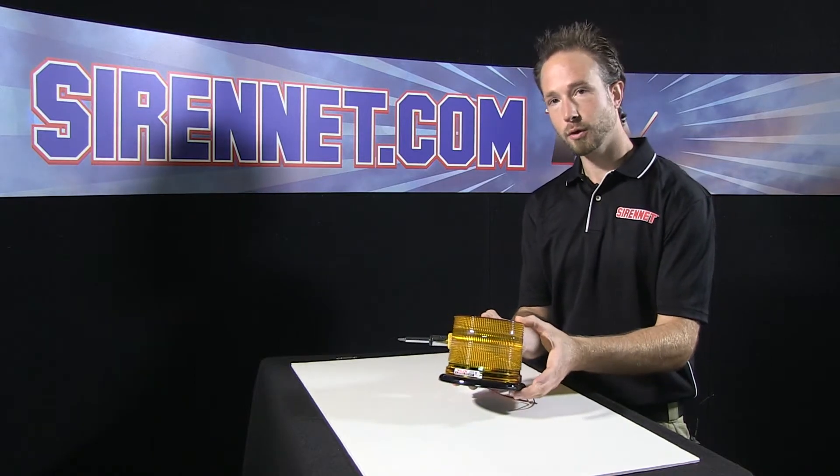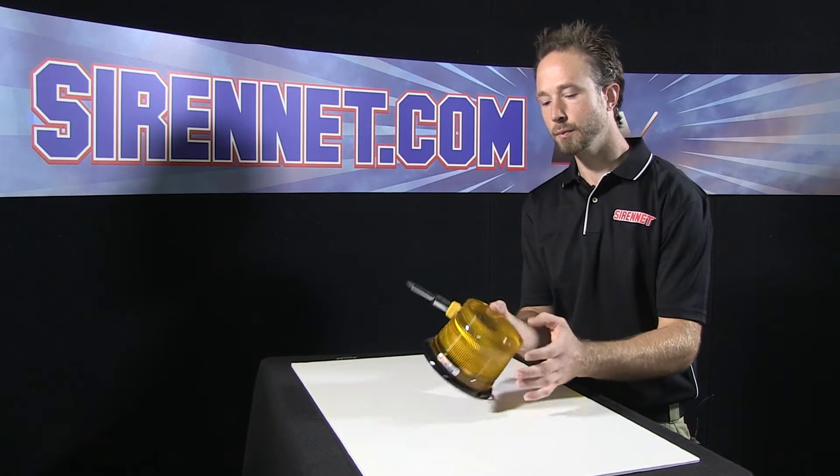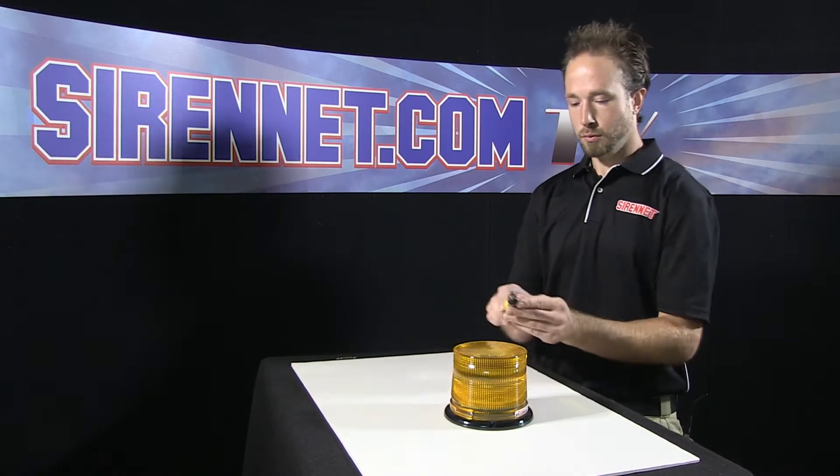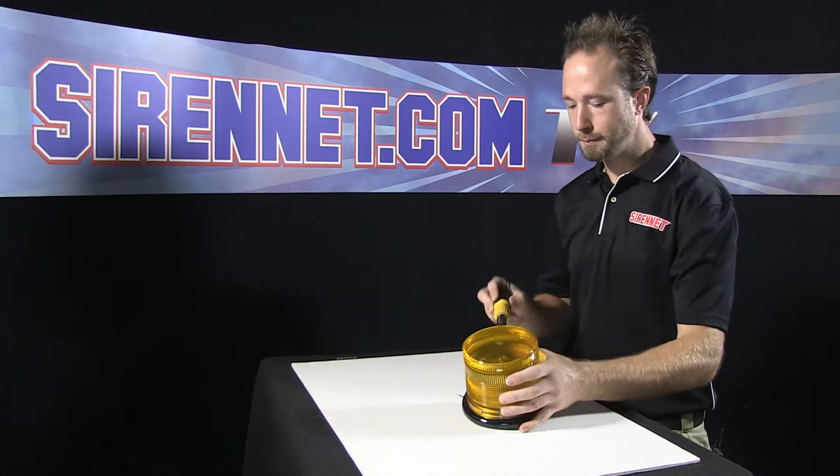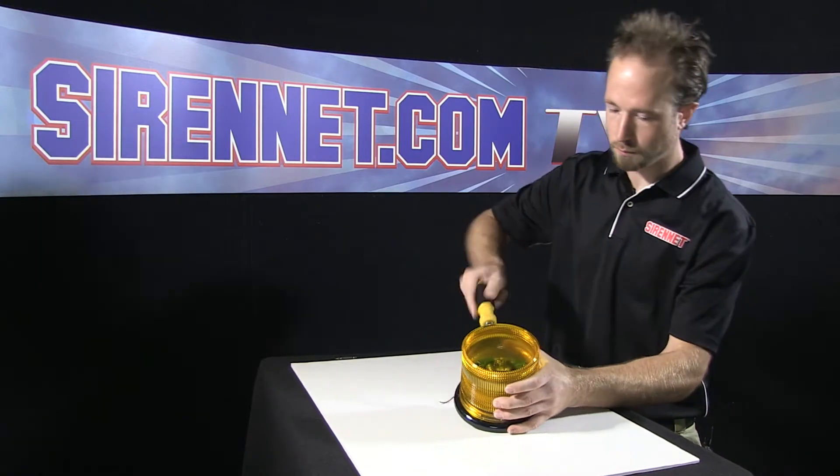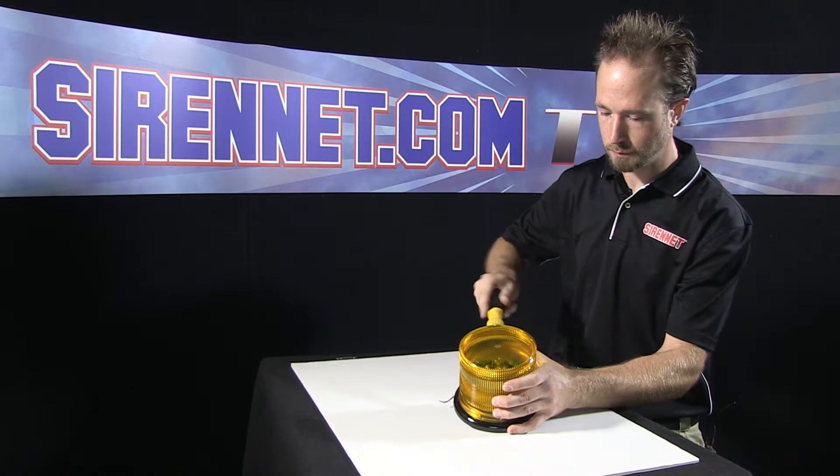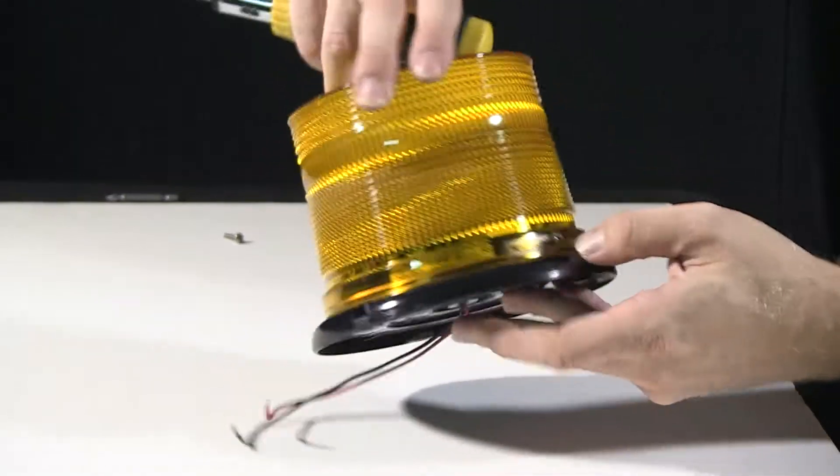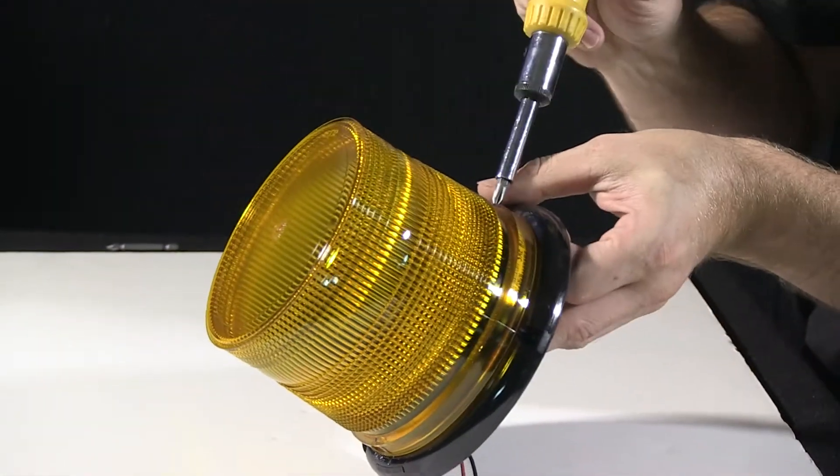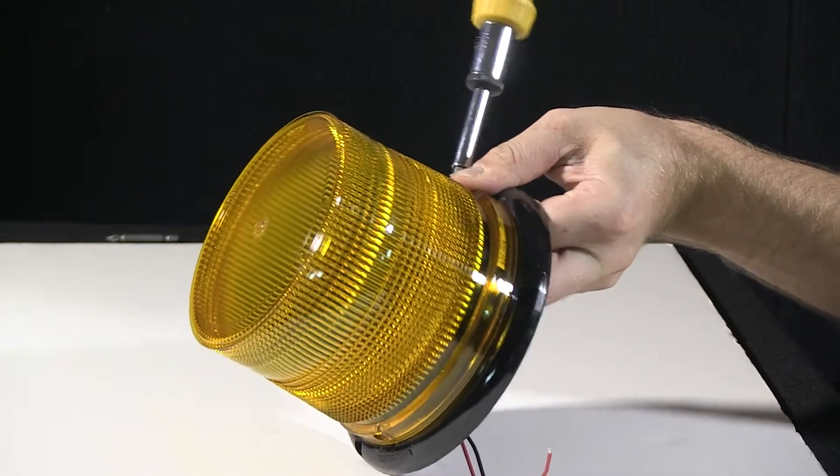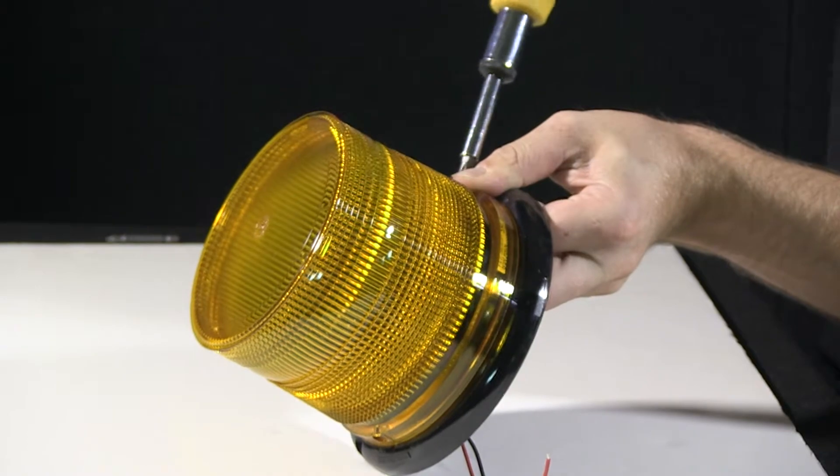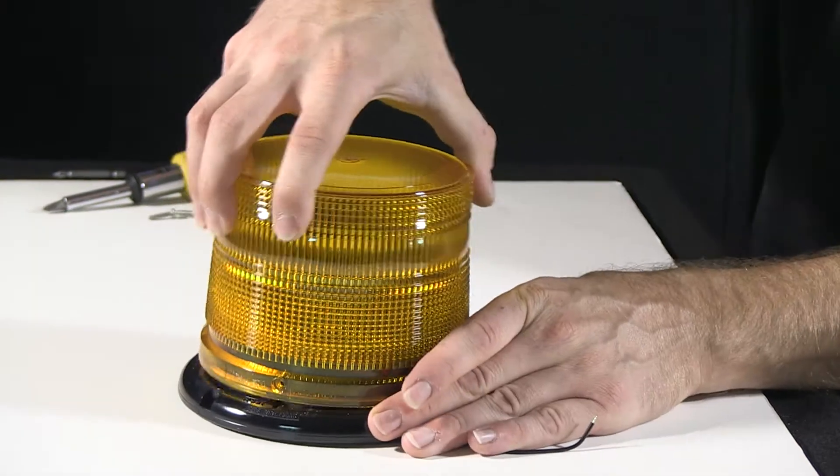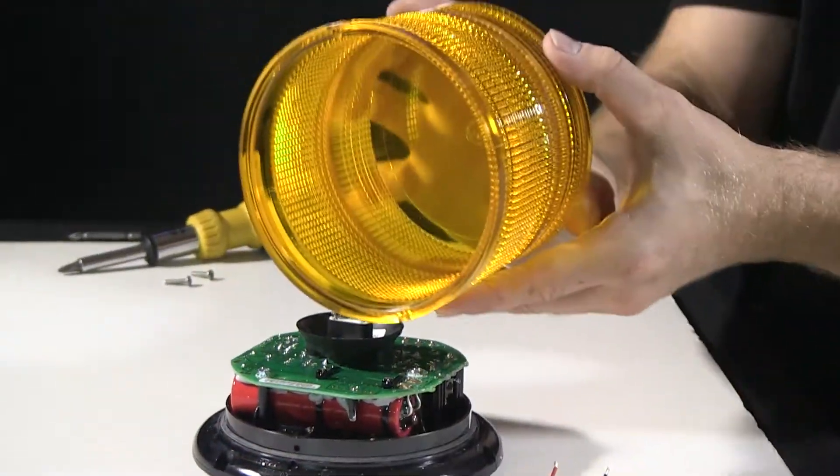I'm going to show you how the dome comes off, how the strobe tube assembly comes out, what the power supply looks like upon removing it from the base assembly. Go ahead, take a Phillips head screwdriver here. The dome is held on with two screws, one in the front, one in the rear. Give the dome a little wiggle. So here's your dome removed.